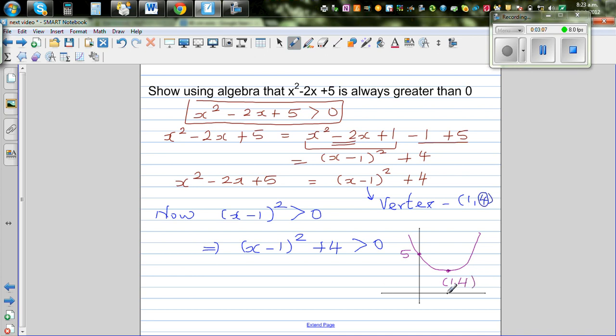You take any value of x, your y-value is never going to go below 4. If you want to be more specific, you can say (x - 1)² + 4 is always greater than or equal to 4.